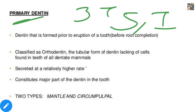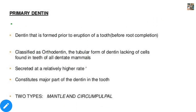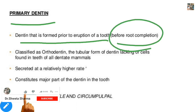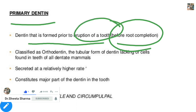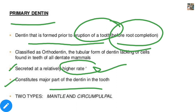First we will study about primary dentine — which dentine is formed prior to the eruption of a tooth. This dentine is secreted at a relatively higher rate as compared to secondary and tertiary dentine, and it constitutes the major part of dentine in the tooth. It is of two types: mantle dentine and circumpulpal dentine.